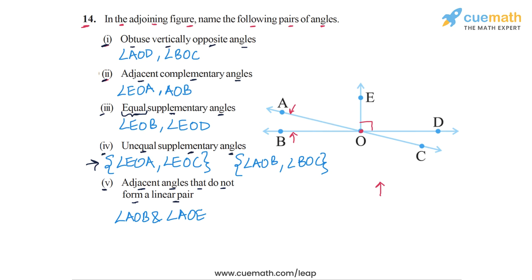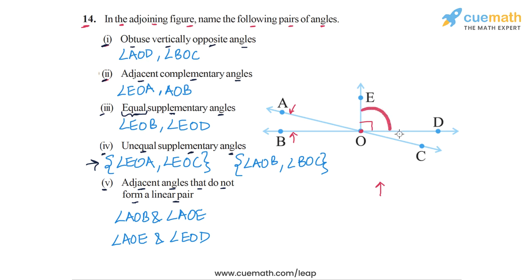Another pair is angle AOE and angle EOD — these add up to angle AOD, which is less than 180 degrees. A third possible pair is angle EOD and angle DOC, which together form angle EOC, again less than 180 degrees. So these are additional valid answers for part five.